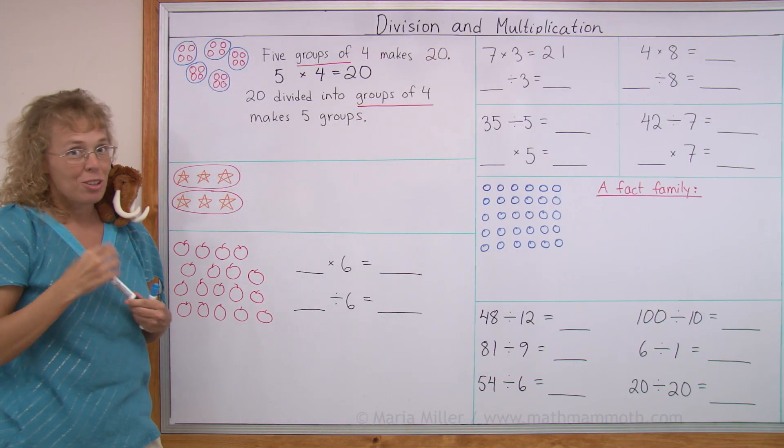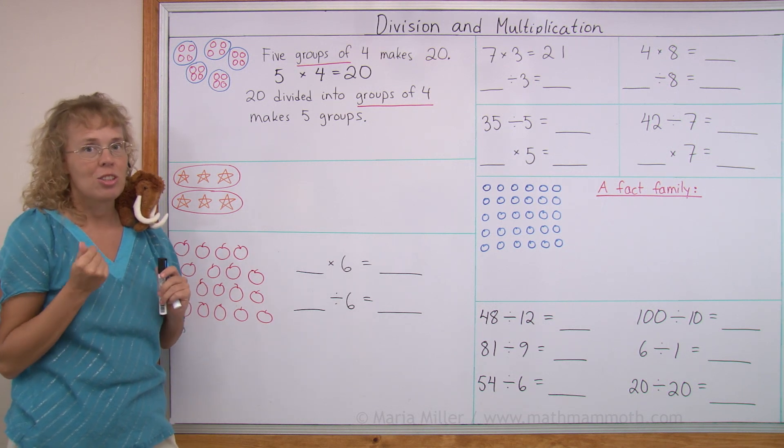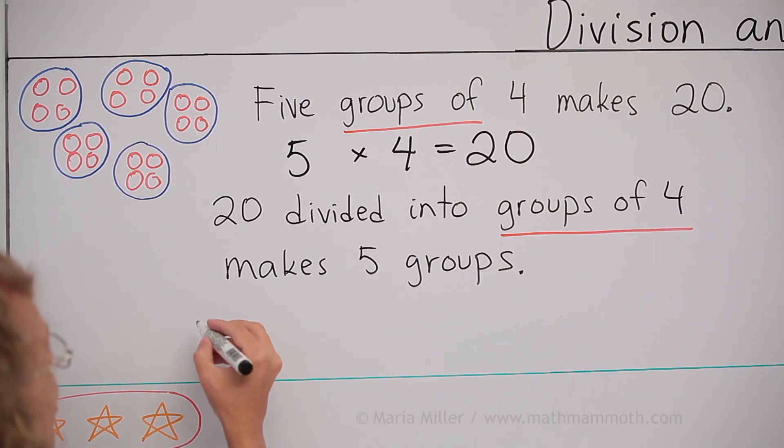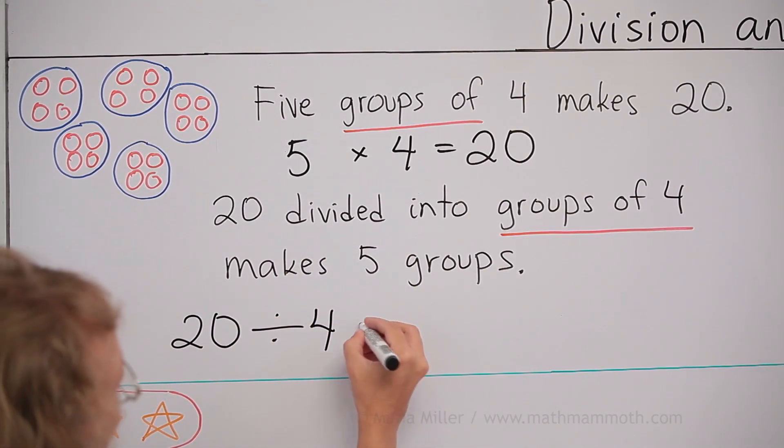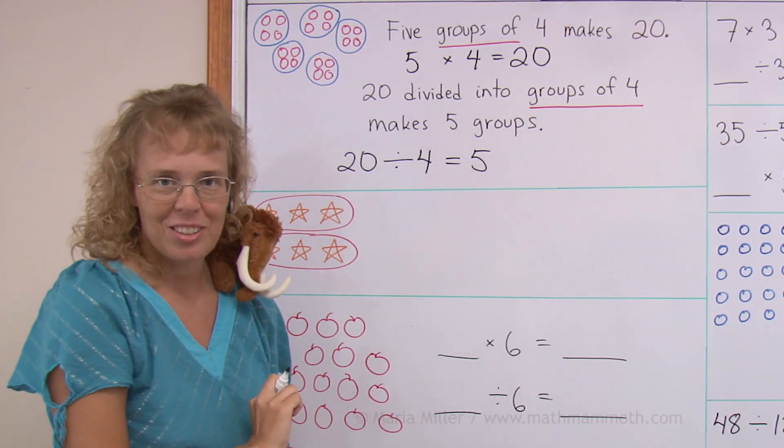But from the same picture we can also write a division, because division also has to do with groups of same size. We have 20 divided into groups of four, makes five groups. 20 divided by four equals five.